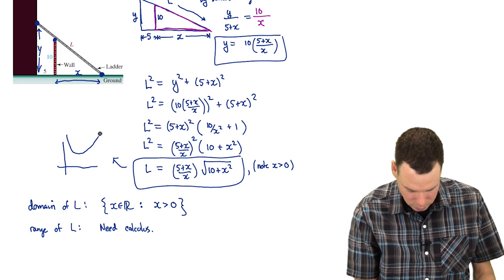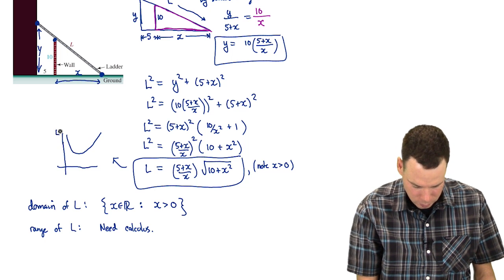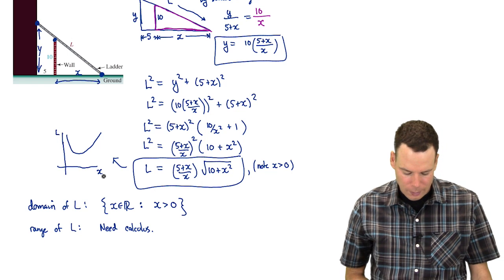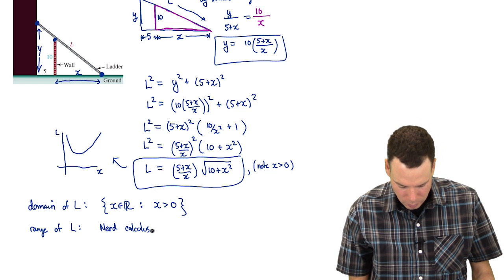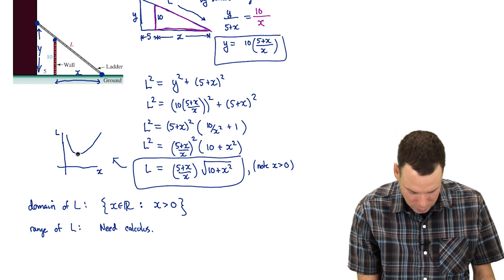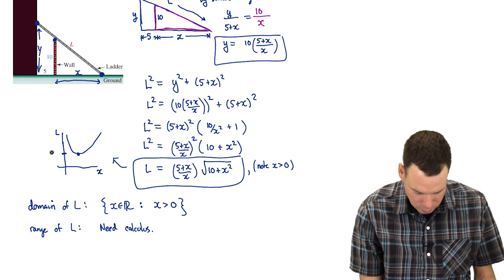So we could plot it and it would look something like this. It comes down and then takes off. So that's L and this is X. What would the range be?